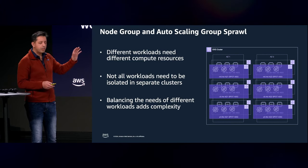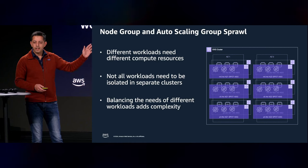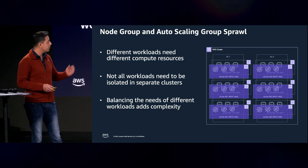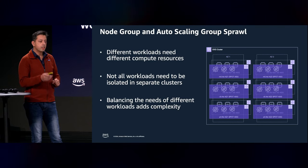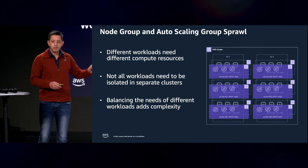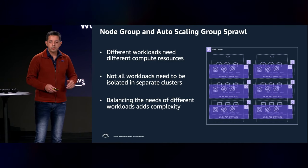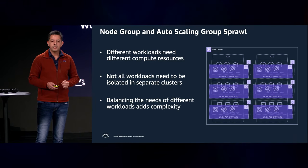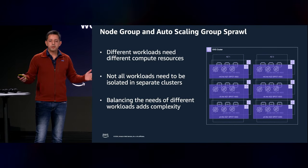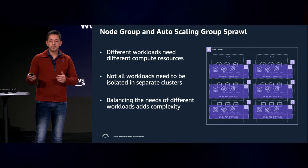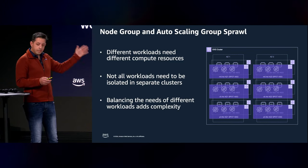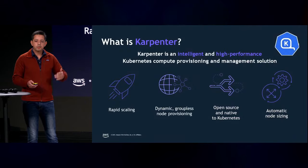For example, with three instance types across two availability zones, that's already six groups to manage. When there's a new Kubernetes upgrade you have to update each one. Imagine using 12 instance types across four availability zones — which is common — and you end up with hundreds of autoscaling groups to manage. That's the complexity we're trying to solve, and we solved it with Karpenter.